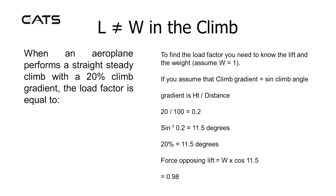To find the load factor you need to know the lift and the weight — assume weight equals 1. If the climb gradient is the same as the sine of the climb angle, and gradient is height divided by distance, a 20% climb gradient equals 20 divided by 100, which equals 0.2. Taking the inverse sine of 0.2 gives an angle of 11.5 degrees. So the force opposing lift is weight cosine 11.5, which comes to 0.98 — in other words, less than 1.